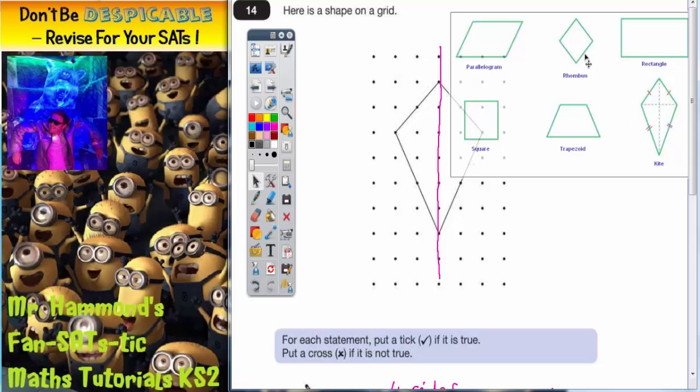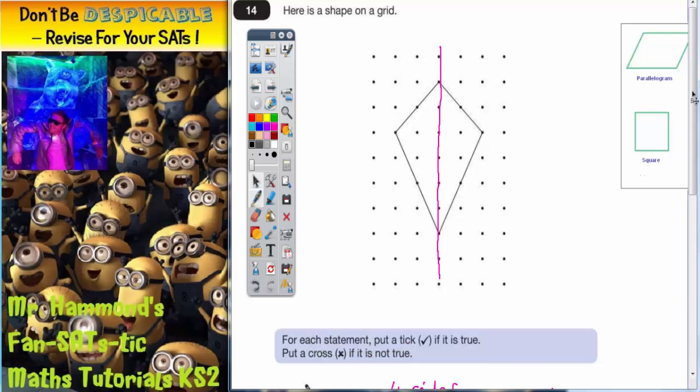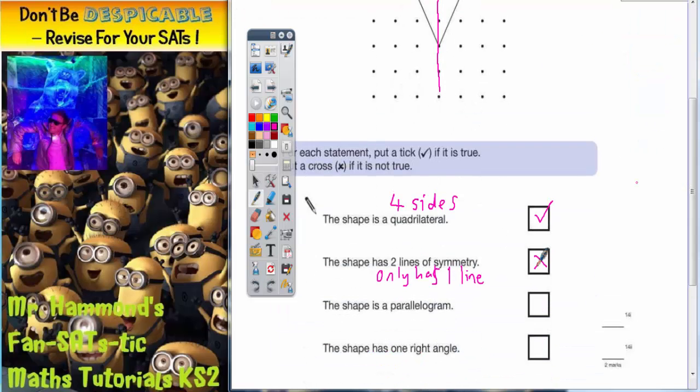Now remember, a rhombus is like a wonky square where all four sides are equal but there are no right angles. A parallelogram is like a wonky rectangle where you've got two short sides and two long sides, but again no right angles. A trapezium is where you've got one pair of parallel lines. But what you can see here clearly is that this shape here that we are dealing with matches a kite, just like an old fashioned kite that you would fly in the sky. So it is not a parallelogram, and that's because it is a kite.